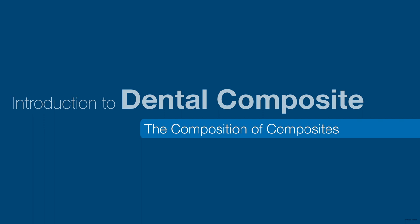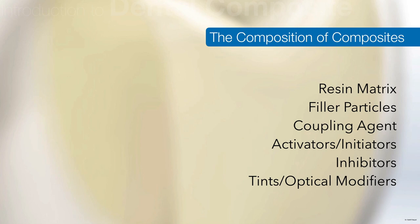After a very good discussion on fillers and matrices, let's move on to the individual components of the composition of dental composites. A resin composite contains four structural components: the polymer matrix, the filler particles, the silane coupling agent that mediates interaction between filler and matrix, and an initiator required to initiate polymerization. These are the basic components of a composite system.